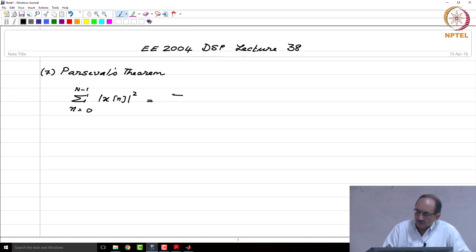the sum of the squares of the absolute value in the time domain is related to the sum of the squares of the DFT values like this and the proof is pretty simple.